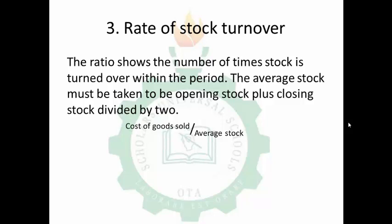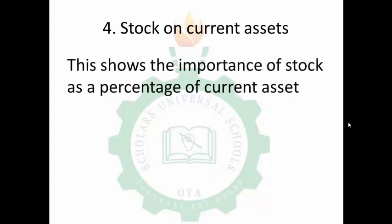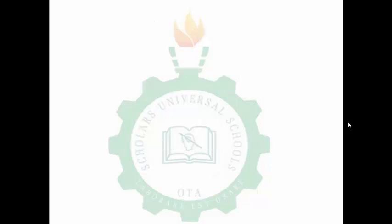Stock as a percentage of current assets shows the importance of stock as a percentage of current assets. The formula is: stock divided by current assets, times 100%.